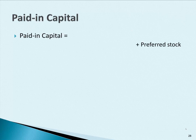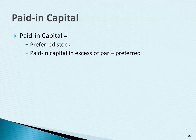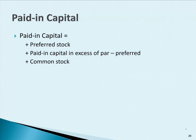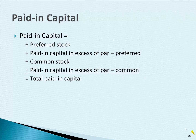So now you also need to know the formula for paid-in capital. Remember, paid-in capital are the amounts that came from issuing stock. So that would be preferred stock plus paid-in capital in excess of par on the preferred stock, common stock, and then paid-in capital in excess of par for the common. That gives you total paid-in capital.